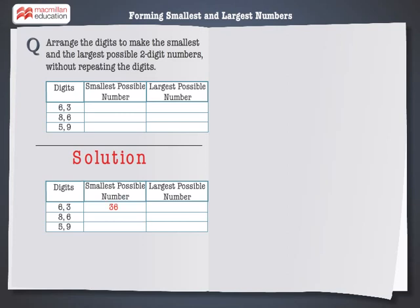Now, to form the largest number with 6 and 3, put the larger digit in the tens place. So, the largest number formed with the digits 6 and 3 is 63.